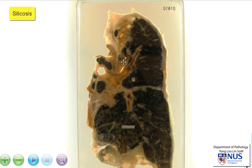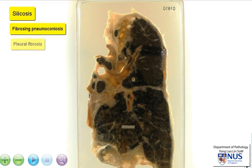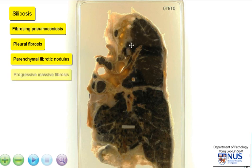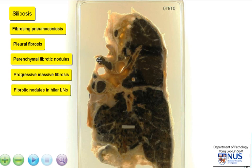In summary, this is an example of a case of silicosis, which is a fibrosing pneumoconiosis. This can give rise to pleural fibrosis, parenchymal fibrotic nodules, which may sometimes progress to progressive massive fibrosis, and they can also give rise to fibrotic nodules within the hilar or regional lymph nodes. There is also accompanying increased carbon deposition within the lung parenchyma, which may also be due to occupational exposure.